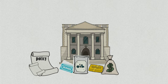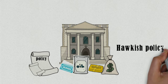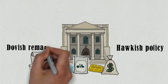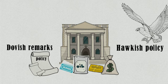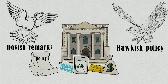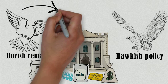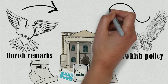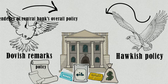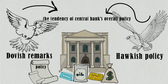Every day, we hear phrases such as hawkish policy, or dovish remarks, from the central bank or the government, and many other such terms. For many of us, these are mysterious concepts. In fact, hawkish and dovish are terms used to describe the tendency of the government or central bank's overall policy.